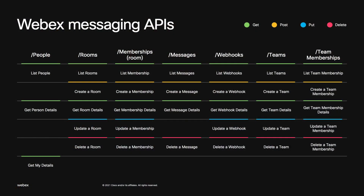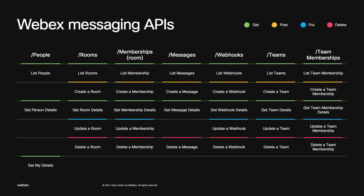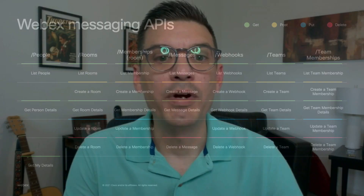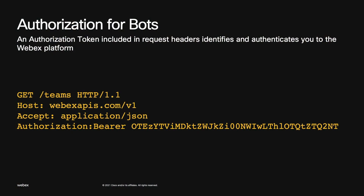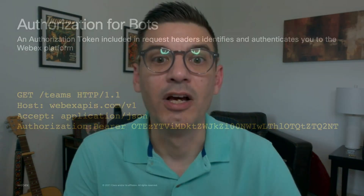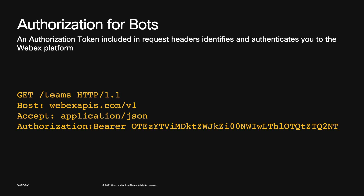The Webex APIs are RESTful, utilizing standard HTTP methods — GET, POST, PUT, DELETE — each represented by color in the API matrix slide. Each column represents most of the Webex messaging APIs that bots are limited to. For example, to have your bot create a new message in a space, that requires an HTTP POST. When you create a bot account on the developer portal, the Webex platform issues a bot authorization token. The platform authenticates each API request through an authorization header containing a bearer token, which both identifies and authenticates the bot before an API call can operate.